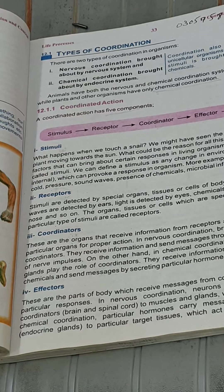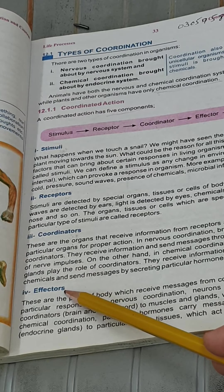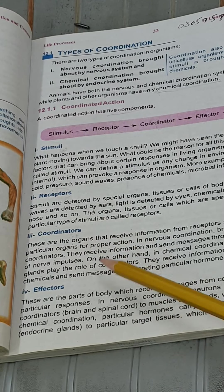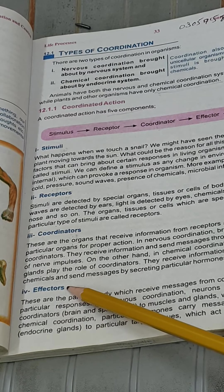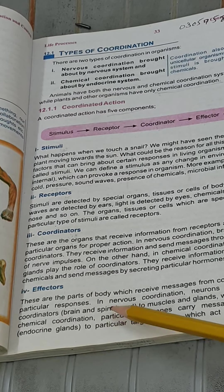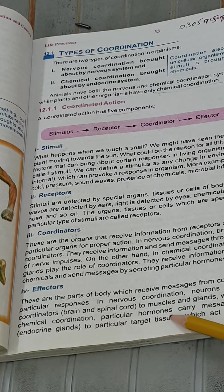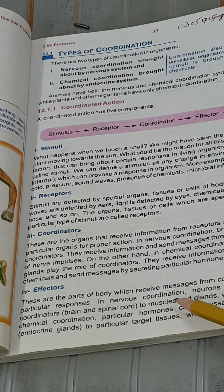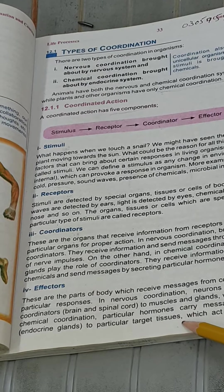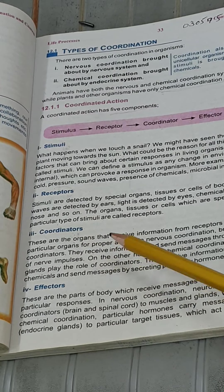The fourth component is effectors. Effectors are those parts of the body which receive messages from the coordinator and show a response. In case of nervous coordination, these may be different organs which receive information through neurons or nerves. In case of chemical coordination, hormones give information to target tissues — sometimes muscles, bones, the liver, or other parts of the body. Effectors receive messages from coordinators and show different responses inside the body.